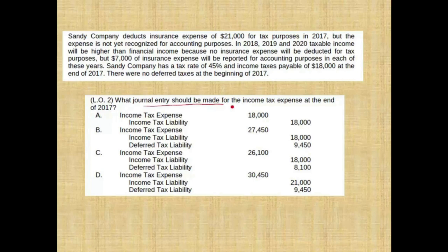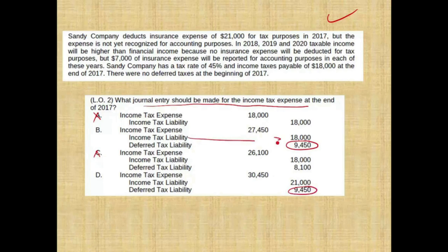What journal entry should be made? You could eliminate A and C because the deferred tax liability should be $9,450. They already gave you income taxes payable of $18,000. Therefore, the answer is B.